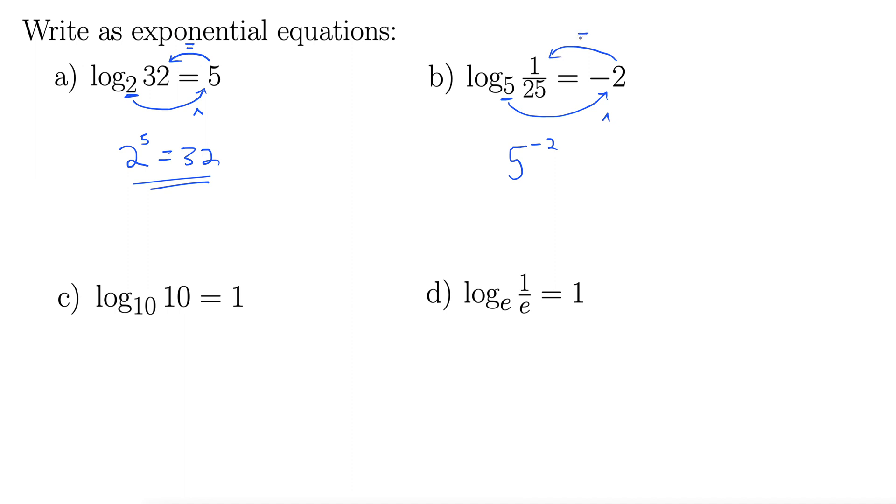Back inside for the equals, equals 1 over 25. And note that this is a true statement. Indeed, 5 to the negative 2 is 1 over 25, and 2 to the 5th is indeed 32.